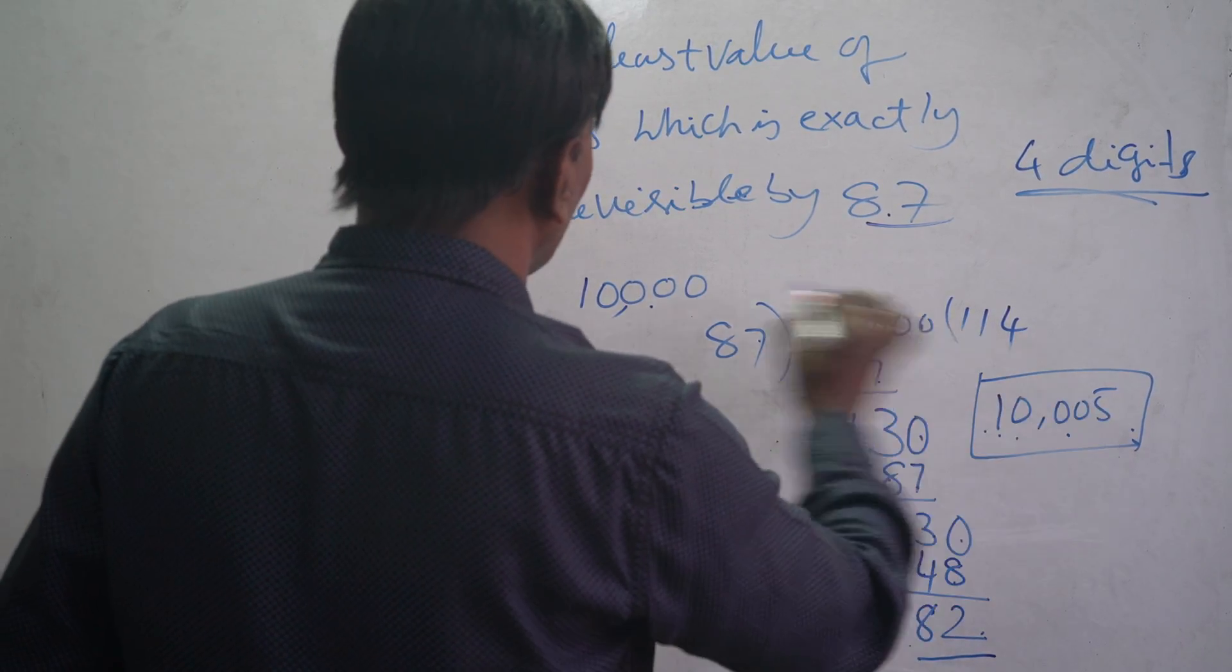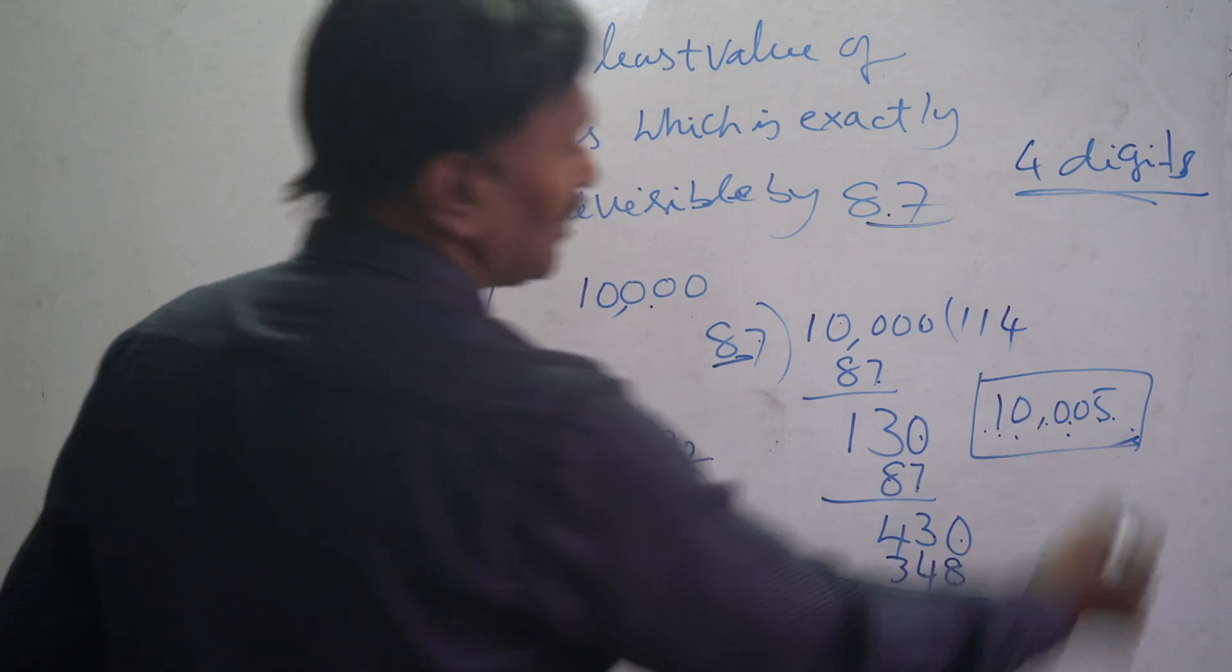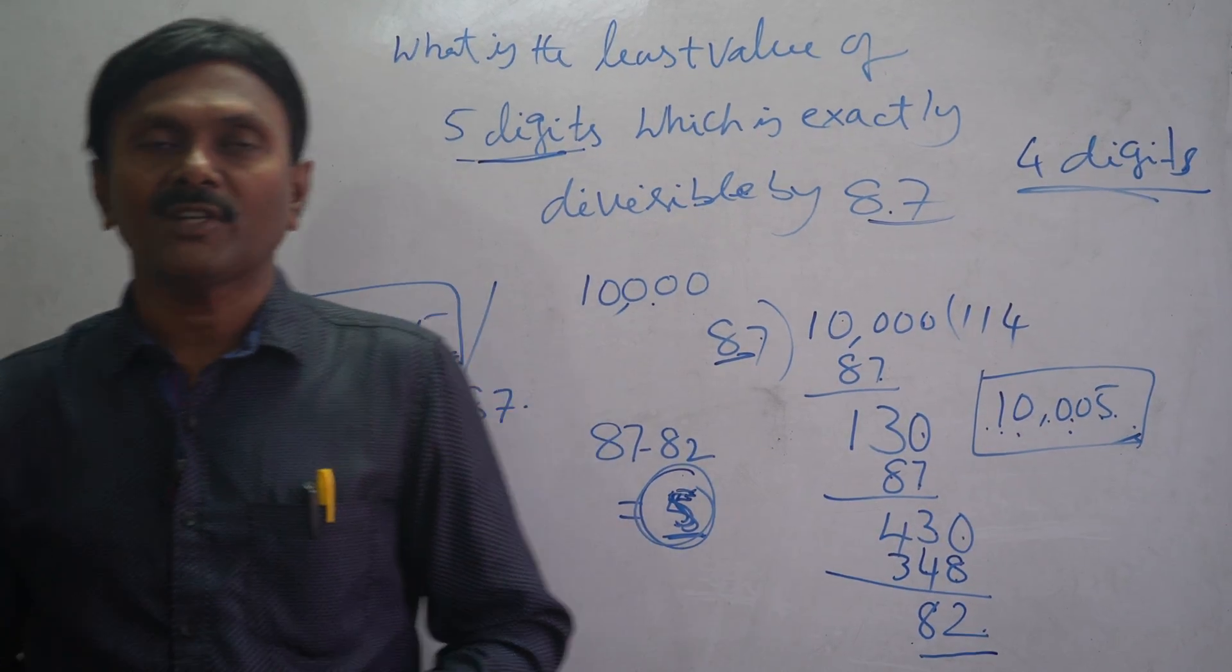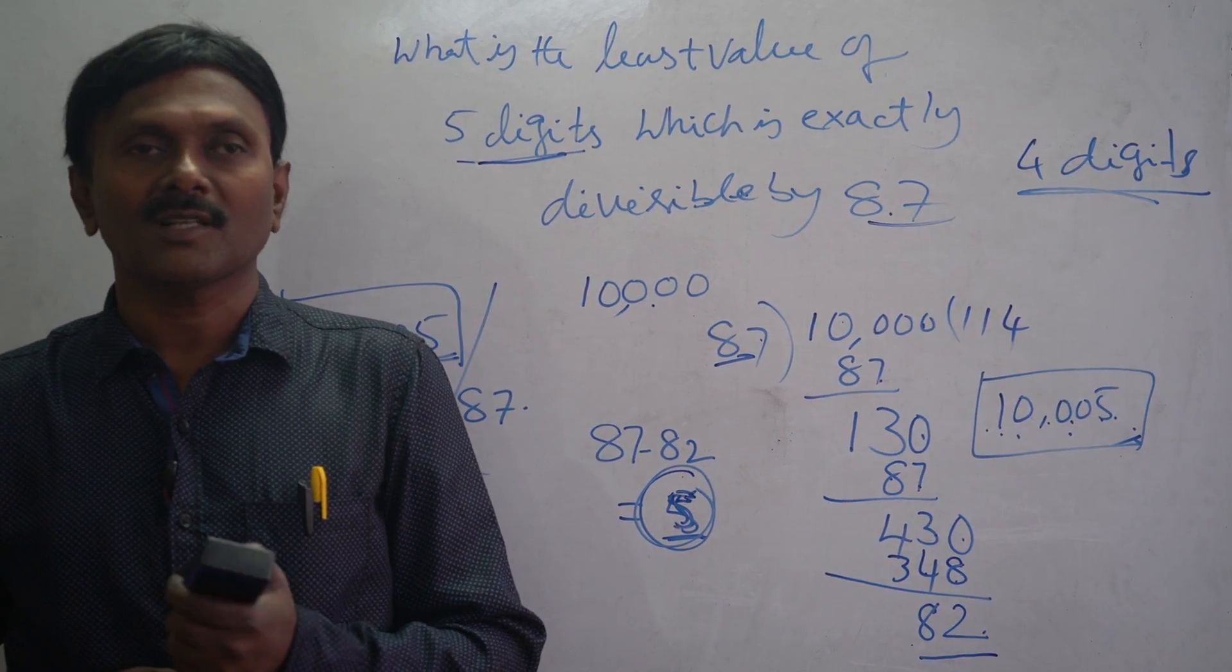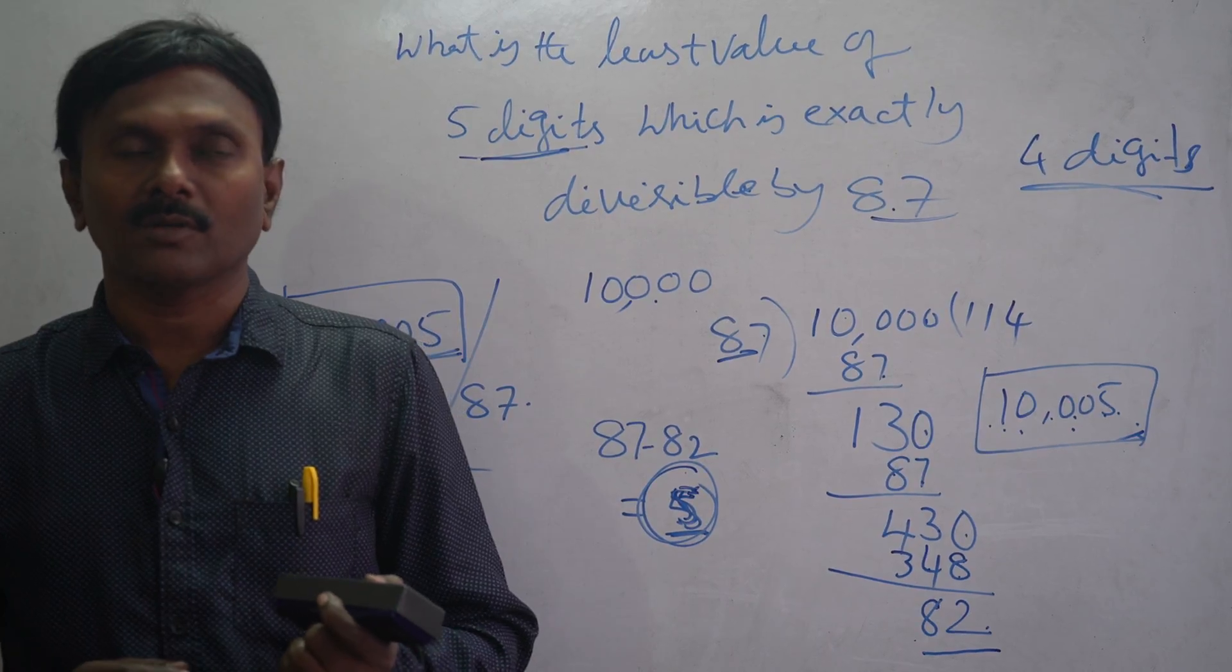The least value of 5 digits which is exactly divisible by 87 is 10,005. I hope you understood. If you like this video, share it and subscribe. Our channel is A Learning Room. Our website is www.alearningroom.com. Thank you very much.